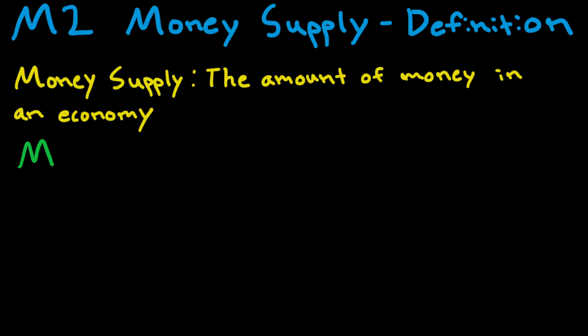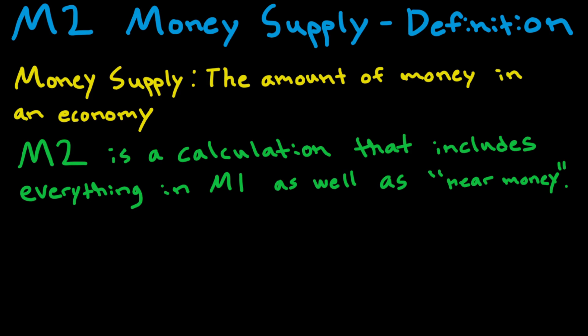M2 is a calculation that includes everything in M1, which is a different type of money. I have a video about that and it will be linked up in the corner. It includes everything in M1 as well as what we call near money. Near money is money that can be quickly converted into cash, but not as quickly as the things in M1.